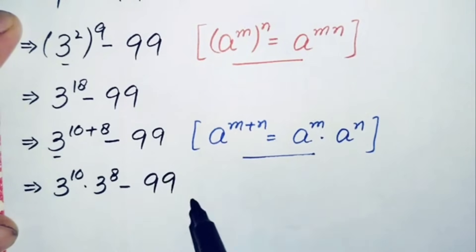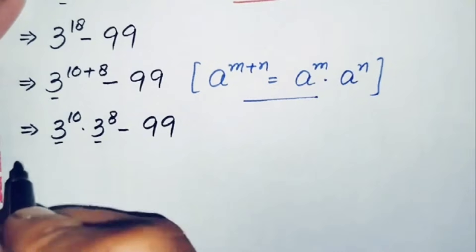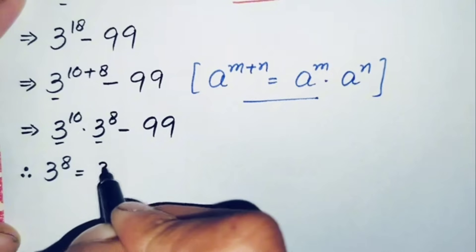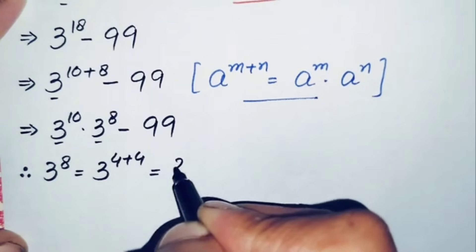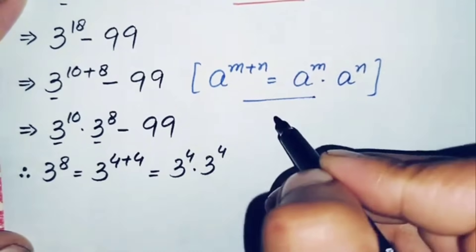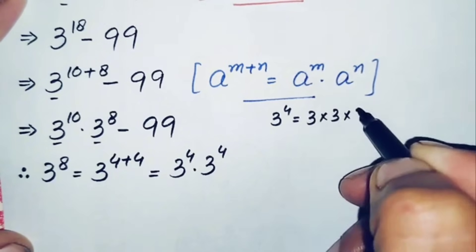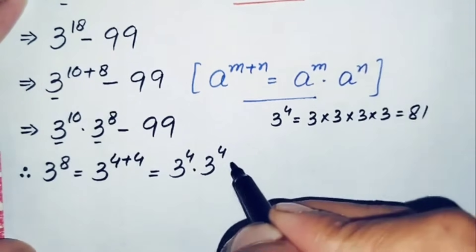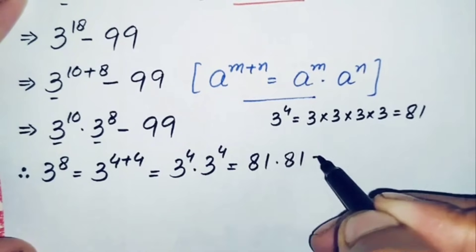Now we will try to find the value of 3^8 and 3^10. For 3^8, we write 8 as 4 plus 4, so 3^8 = 3^4 × 3^4. The value of 3^4: multiply 3 four times — 3×3=9, 9×3=27, 27×3=81. So 3^4 = 81.